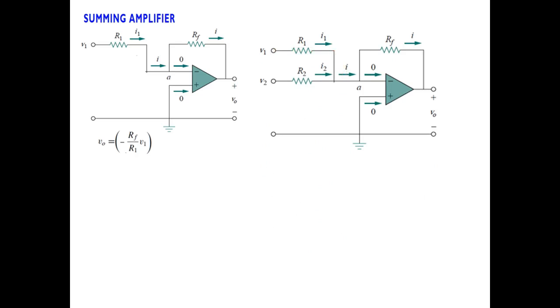Two inputs connected to terminal VA. If we consider them individually, we can find the output for each. The sum of the two: this equation is Rf by R1 into V1 and Rf by R2 into V2. This is the equation for the output voltage if we have two inputs. What if we have three inputs?